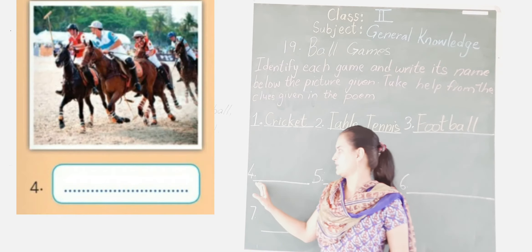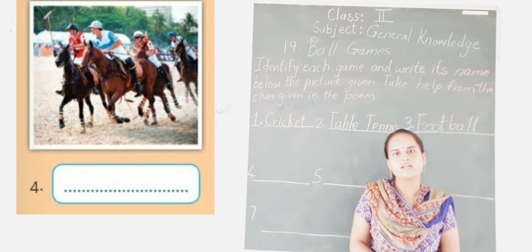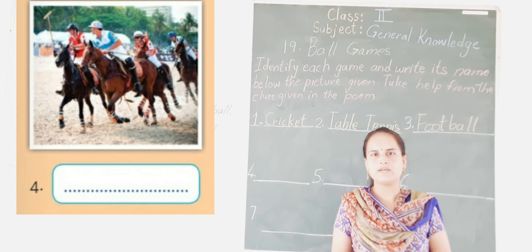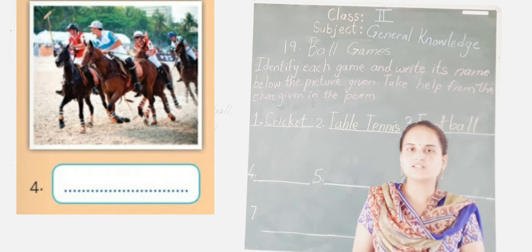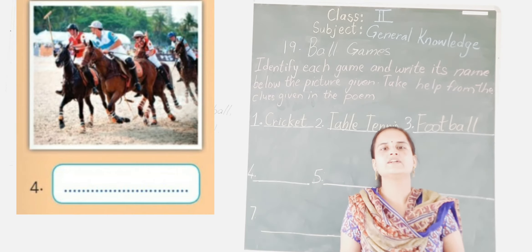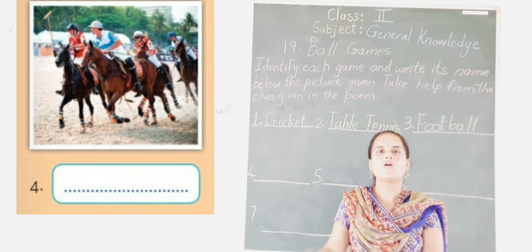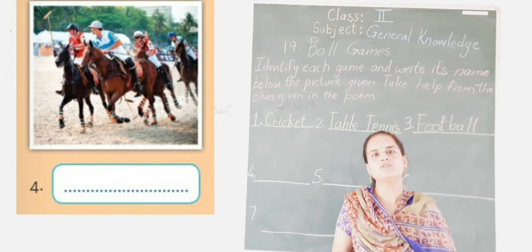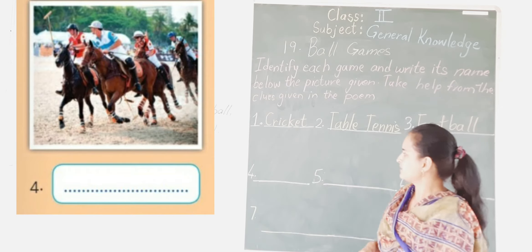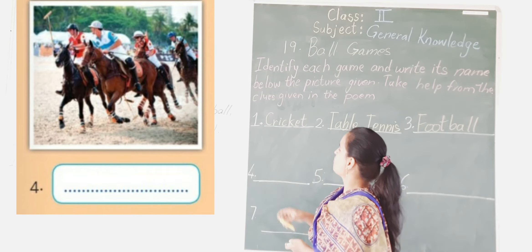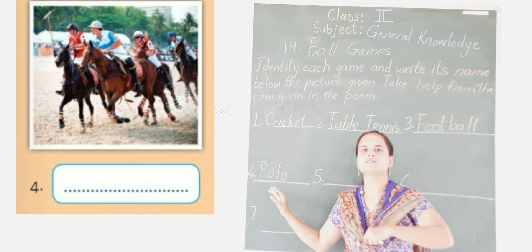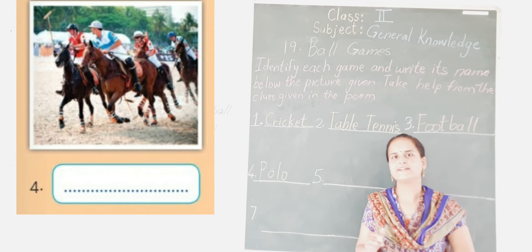Now the fourth one — which game is it, children? Yes, it is polo. In this game the players ride on a horse and they strike or hit the ball with a long bat, and they have to hit the ball to the goal. So the fourth game is polo.